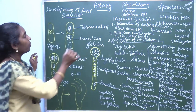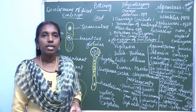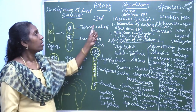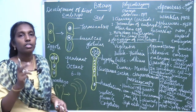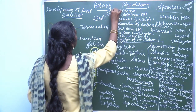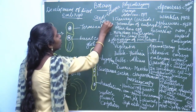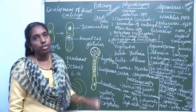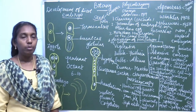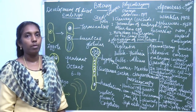The next topic is seed. A seed is the fertilized ovule. There are two different types of seeds: endospermous and non-endospermous. Endospermous seeds are otherwise called albuminous seeds. Non-endospermous seeds are called exalbuminous seeds.